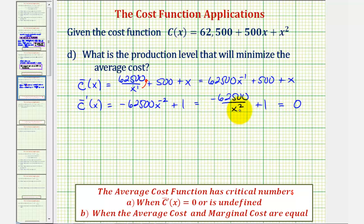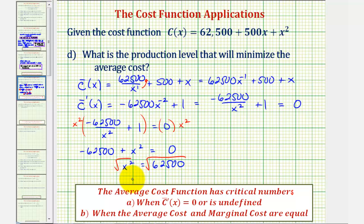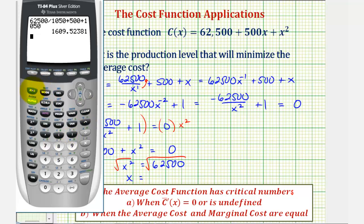Solving x squared equals 62,500 and taking the positive square root (since x is a production level and cannot be negative), we get x equals 250. This is the only feasible critical number. Using the second derivative test, the second derivative is positive 125,000 x to the negative three, which is positive at x equals 250, confirming the function is concave up and has a minimum there. So the production level of 250 minimizes the average cost.